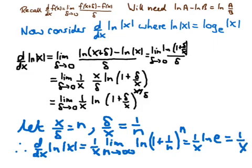Therefore the derivative of the natural logarithm of x — and in general the natural logarithm of the modulus of x — is 1 over x. You're encouraged to make this argument more robust by inserting a factor of 2 and tracing through to confirm you still get the same result.